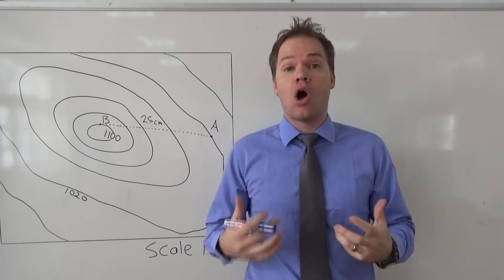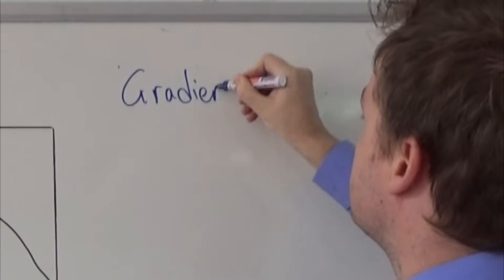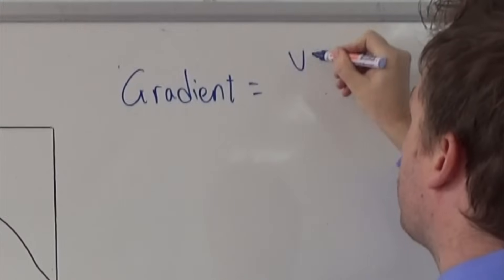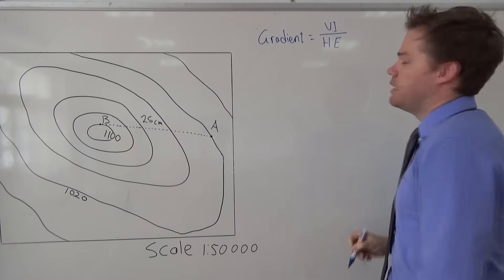The formula is gradient equals vertical interval over horizontal equivalent. Now what does this tell you?